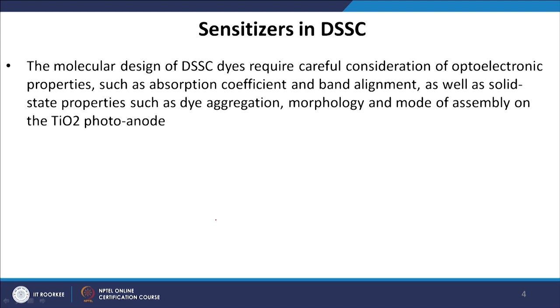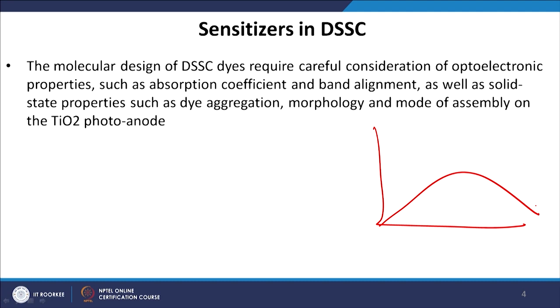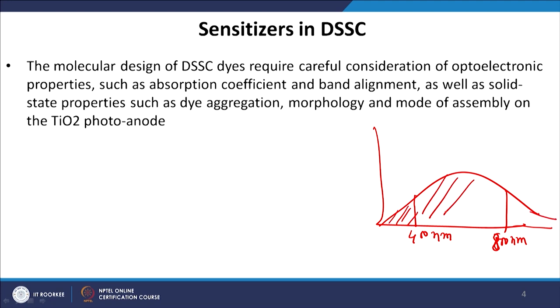The first important parameter is absorption. Does it absorb in the UV region, the visible region, or the near-IR region? If we plot the electromagnetic spectrum, a dye with an absorption spectrum spanning from UV (around 400 nm) through visible to near-IR (around 800 nm) is ideal, because it covers a large part of the electromagnetic spectrum.